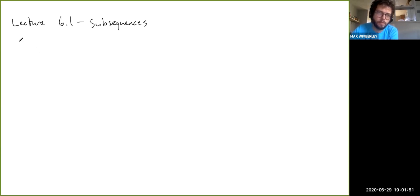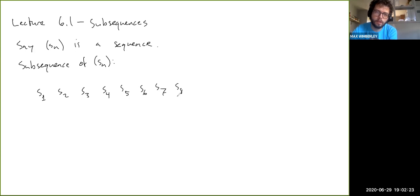So let's say we have a sequence, say Sn is a sequence. Then a subsequence would be what you would get by basically going through Sn. So let's write out some terms of Sn: S1, S2, S3, S4, S5, S6, S7, S8, S9, S10, S11, S12, and so on. And then pretty much we can pick some terms of this sequence to make a new sequence. That's all a subsequence is.